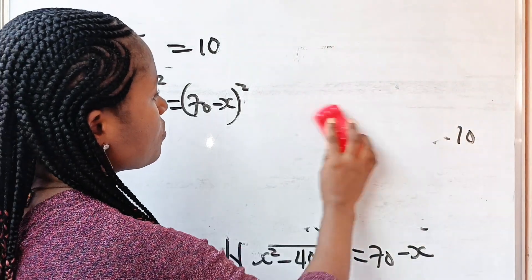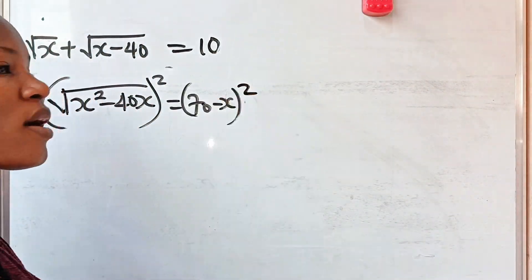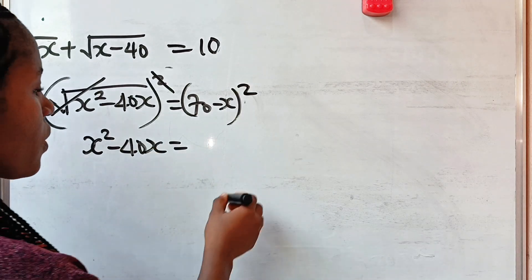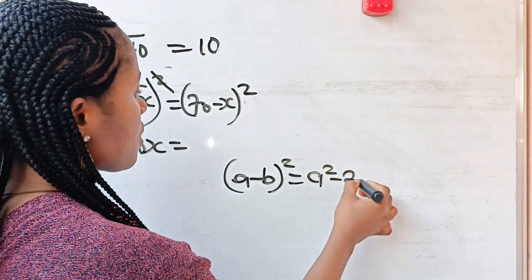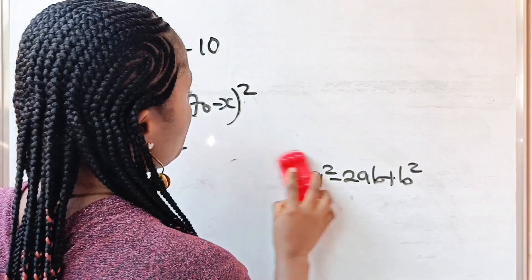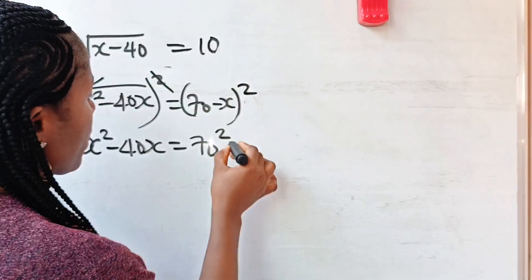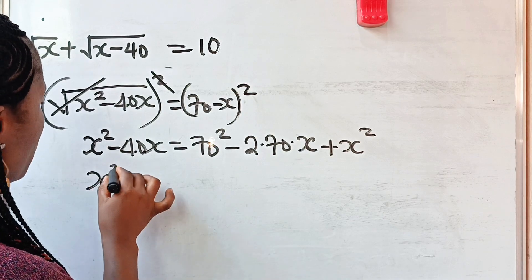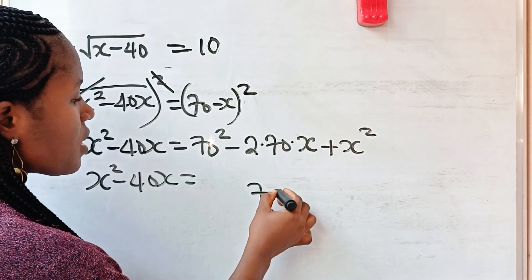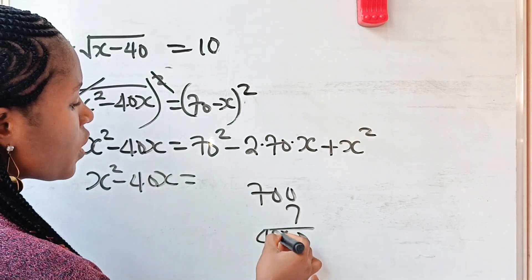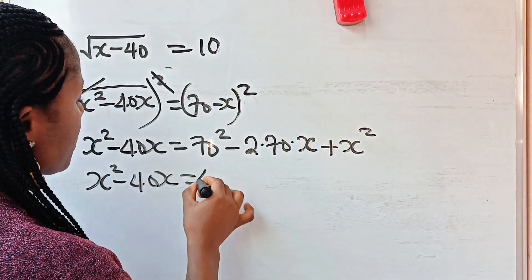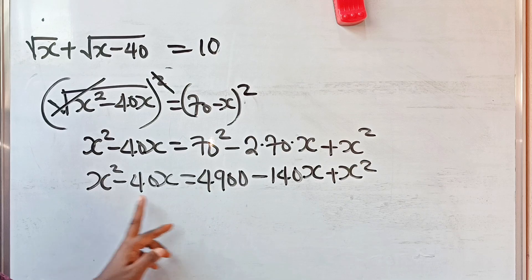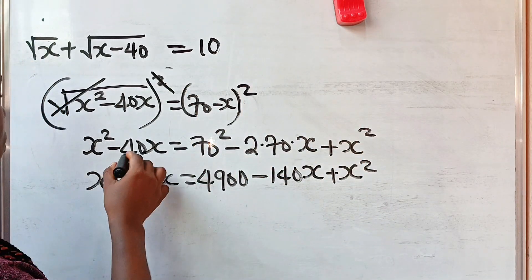So squaring both sides, we have square root of x squared minus 40x, all squared, is equal to 70 minus x squared. The square removes the square root, leaving x squared minus 40x on the left. On the right, recall that a minus b raised to the power 2 equals a squared minus 2ab plus b squared. So this gives us 70 squared minus 2 times 70 times x plus x squared, which is 4,900 minus 140x plus x squared. Now, x squared appears on both sides, so they cancel each other out.